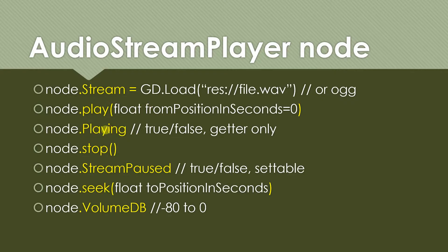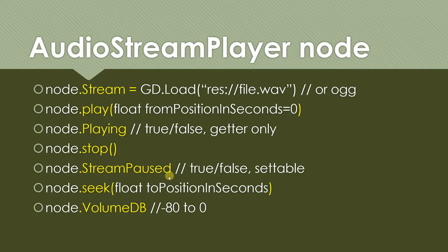The playing property is a getter-only boolean that tells you whether the sound is currently playing or not. The stop method stops the sound and moves the position back to the beginning. If you want to pause and unpause, use the stream_paused boolean property — set it to true to pause, false to unpause.